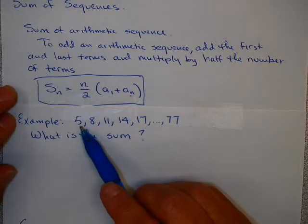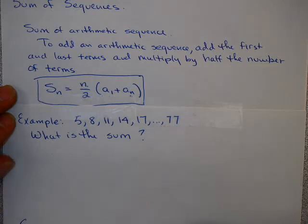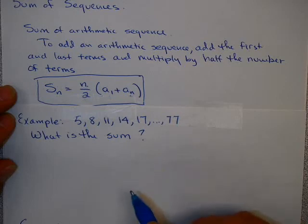For example, consider this sequence: 5, 8, 11, 14, 17, all the way up to the number 77. We'd like to know, what is the sum of these numbers?